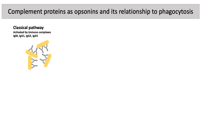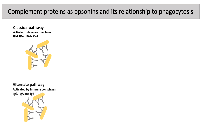The classical pathway of the complement system is activated by immune complexes of IgM or IgG isotypes, whereas the alternate pathway of the complement system is well known as an antibody-independent pathway. However, at times the immune complexes of IgG, IgA, and IgE also tend to activate the alternate pathway.